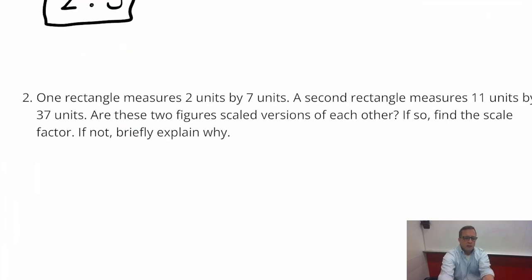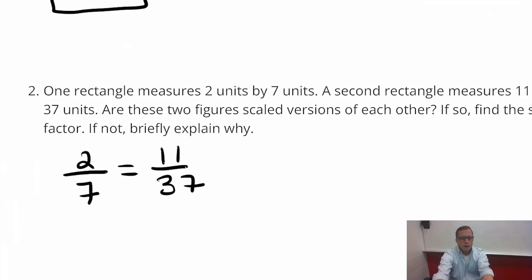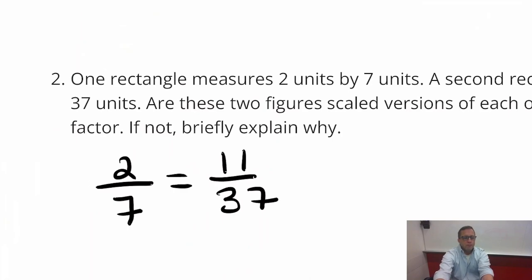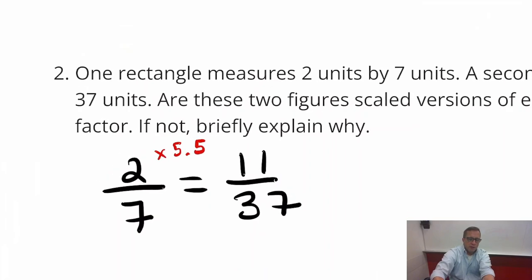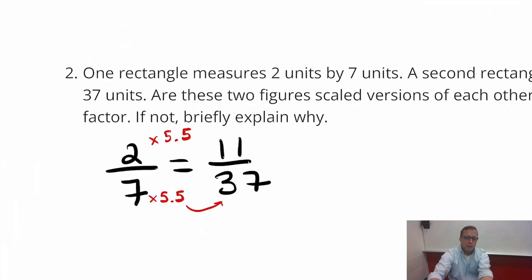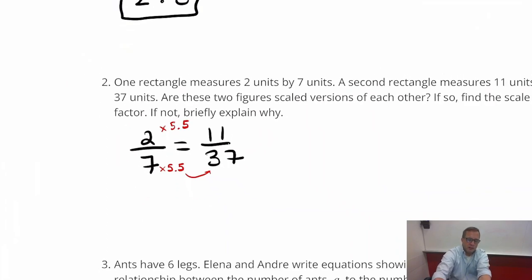Well, we could easily just do this if we compare, let's say I write them out in fraction form. So two to seven and I want to compare that to 11 to 37. So in order for me to get 11 out of two, we would just have to do five and a half, like 5.5. And now 7 times 5.5, 7 times 5.5 does not equal 37. So right there, these are not scaled versions.